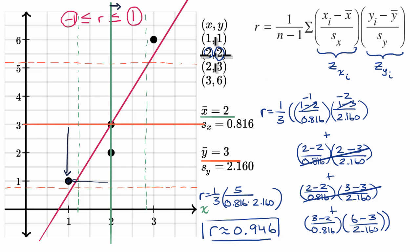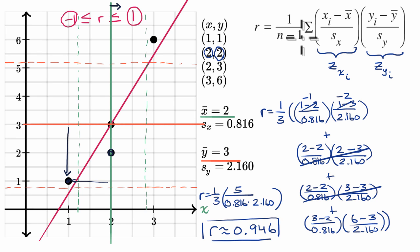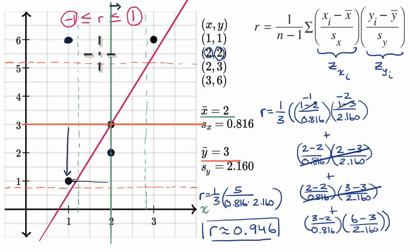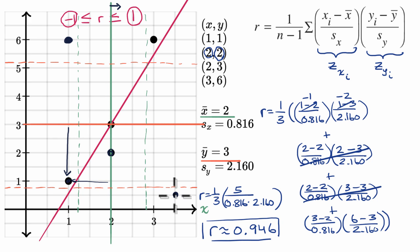For the next data point, two comma two: the x variable was right on the mean, so the x z-score was zero, and that entire term became zero. That takes away a little from our correlation coefficient — not because it's negative, but because you're not contributing to the sum while still dividing by a slightly higher value. If you had a data point where x was below the mean and y was above the mean, that term would be negative — negative x z-score times positive y z-score — pulling r lower. Similarly, a positive x z-score times a negative y z-score would also be negative, pulling r even lower.